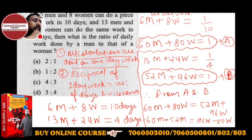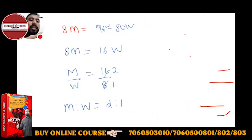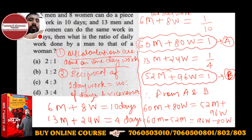Karthik Bhandari — it's not 1 is to 2, it will come 2 is to 1, because you have to find the ratio of man to that of woman.